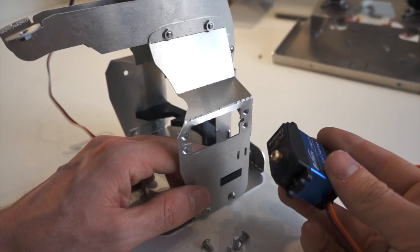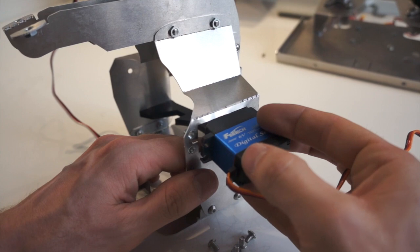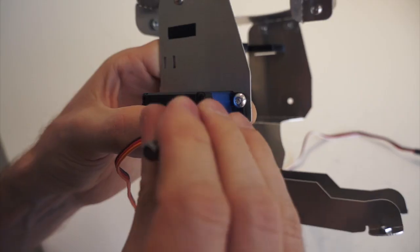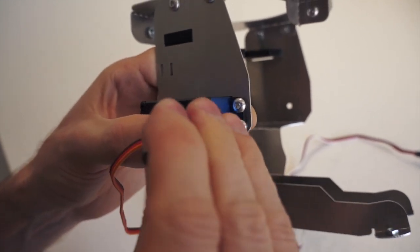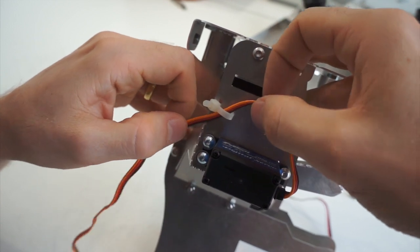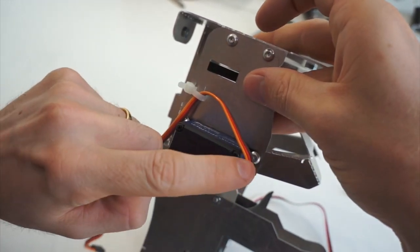Same for the blue servo, make sure it's well oriented, insert it and just screw. Make the wire go through this plastic collar so that it won't touch the wheels.